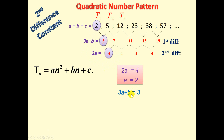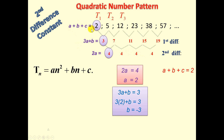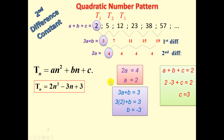Next, 3A + B = 3. Substituting A = 2: 3 times 2 + B = 3, so 6 + B = 3, giving B = −3. To find C, A + B + C = 2. Substituting A = 2 and B = −3: 2 − 3 + C = 2, so −1 + C = 2, giving C = 3.